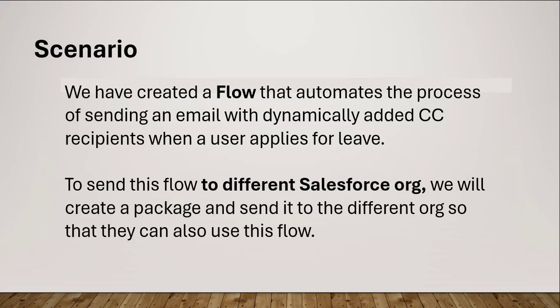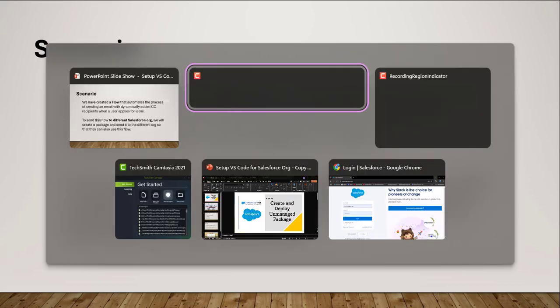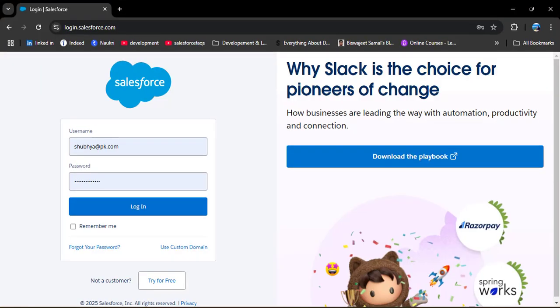Now let's take a scenario. We have created a flow that automates the process of sending an email with dynamically added CC recipients when a user applies for leave. Using this scenario, I will show you how to create an unmanaged package and deploy it to a different Salesforce org. First, let me show you this flow scenario — jumping to the Salesforce org.